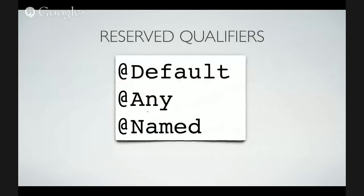There are three reserved qualifiers in CDI. @Default, which is applied to all beans that don't have a qualifier. @Any, which is added to all bean definitions to help implement programmatic lookup. And @Named, which is used to provide a way to access the bean from the UI interface — from expression language via an ID string. That's the only place where you can put a label or ID on a bean.